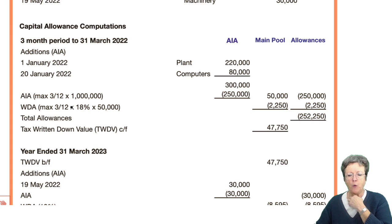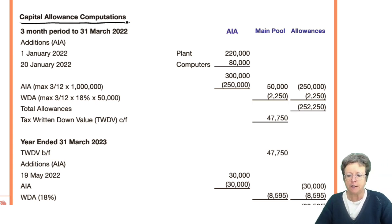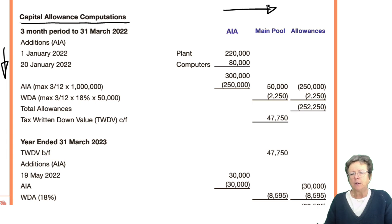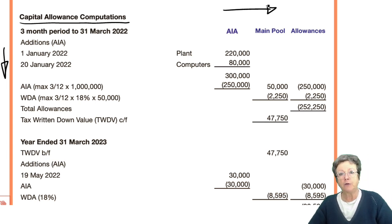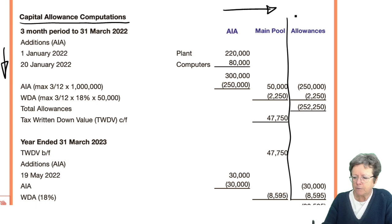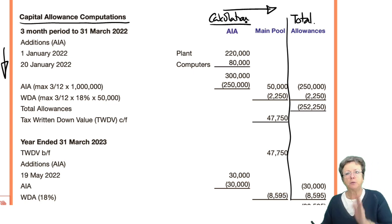We always head up our computations — always put a heading so the examiner knows this is a capital allowance computation. Put the pro-forma down the left-hand side and headings across the top. One of the difficulties with capital allowances is working out how many columns you need. You have a total column at the end, plus an AIA and main pool column — the AIA column is a calculation column, so at the end of the day it should be empty.